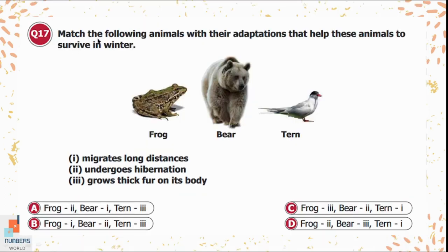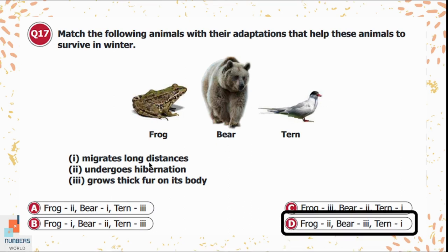Question 17: Match the following animals with their winter survival adaptations — frog, bear, and tern. The first adaptation is 'migrates long distances,' which applies to the tern. The second is 'undergoes hibernation,' which applies to the frog. The third is 'grows thick fur on its body,' which applies to the bear. So the order is: frog → hibernation, bear → thick fur, tern → migration. Option D is correct.